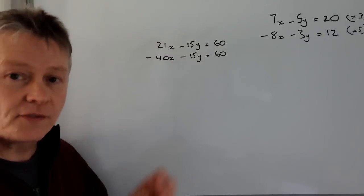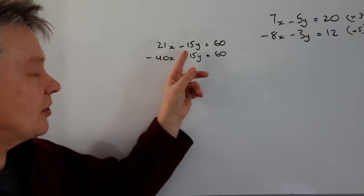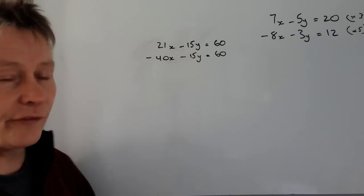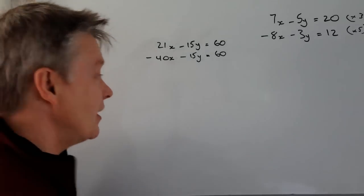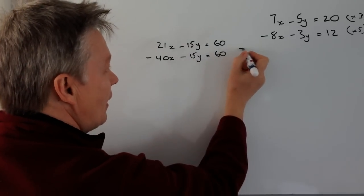So that gives me the advantage now that I've got two terms, 15y and 15y. I need to get rid of those terms, and what I'm going to do is I'm going to minus them.